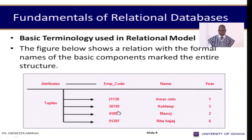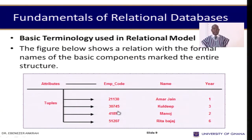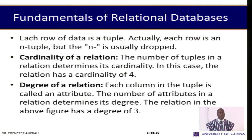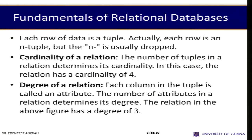Looking at this table, the first row stands for n-tuple, and all the rows are tuples. The column headings — for example, employee code, name, and year — are all attributes. In relational databases, we have attributes, rows, and n-tuples, which are normally called tuples. The cardinality of a relation is the number of tuples in a given relation. For the table we've just seen, we have four tuples, and therefore the cardinality of that relation is four. The cardinality stands for the number of rows or tuples available.